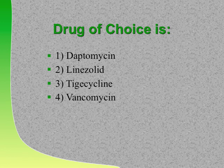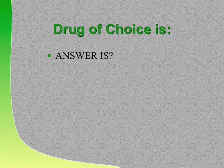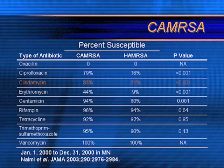A spider bite in the community equals community-acquired MRSA. Drug of choice for community-acquired MRSA in the clinic: doxycycline is preferred over Septra; doxy outperforms Septra in most cases, though Septra can be used second-line. In pediatrics where you can't give doxycycline, use Septra. Clindamycin is losing effectiveness. Quinolones can be used for community-acquired MRSA but not hospital-acquired.